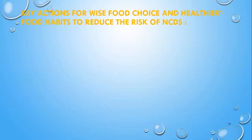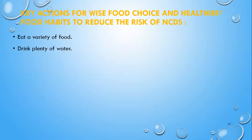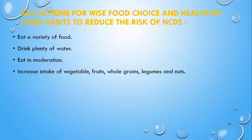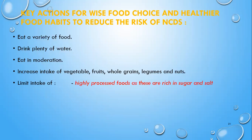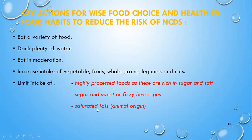Some key actions for wise food choice and healthier food habits to reduce the risk of NCDs: eat a variety of food; drink plenty of water; eat in moderation; increase intake of vegetables, fruits, whole grains, legumes, and nuts. Limit intake of highly processed foods as these are rich in sugar and salt, as well as sugary and fizzy beverages. Limit intake of saturated fats, especially of animal origin. Limit intake of salt and salty snacks. Limit intake of fried foods.